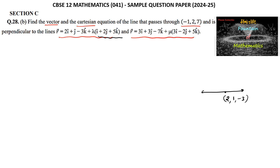Direction ratios means we may consider the parallel vector. The first line has direction ratios 1, 2, 5.